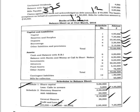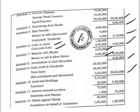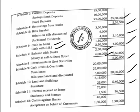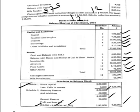Note number 9, advances: cash credit and overdraft 20 lakh, term loans 25 lakh, bills purchased and discounted 5 lakh — total advances 50 lakh. Note number 10, fixed assets: land and buildings 5,15,000 plus furniture 25,000 — total 5,40,000. Note number 11, other assets: interest accrued on loans 75,000 plus stamps and stationery 1,500 — total 76,500. Adding notes 6 to 11 gives total assets of 72,66,500, which equals total capital and liabilities — the balance sheet has tallied.